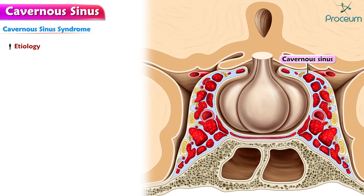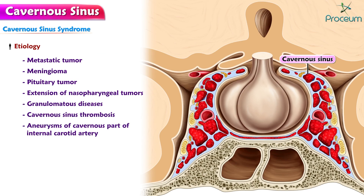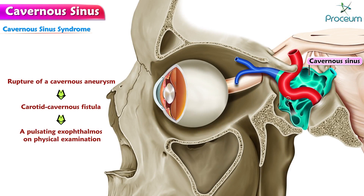There are several causes of cavernous sinus syndrome, including metastatic tumor, meningioma, pituitary tumor, extension of nasopharyngeal tumors, granulomatous diseases, cavernous sinus thrombosis, and aneurysms of the cavernous part of the internal carotid artery. In case of rupture of a cavernous aneurysm, a carotid cavernous fistula is created, leading to a pulsating exophthalmus on physical examination.